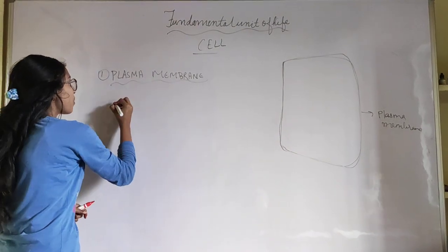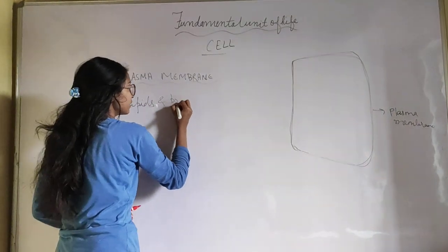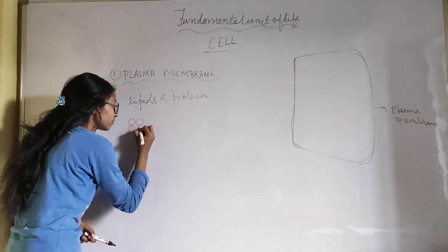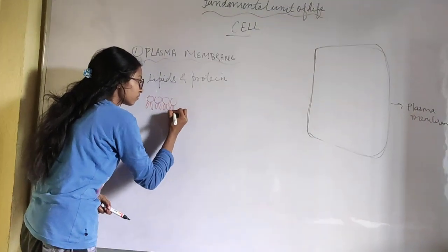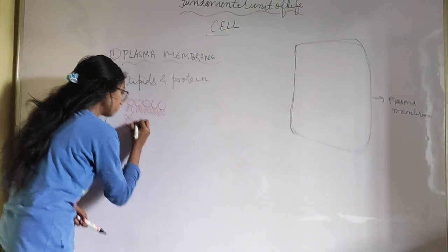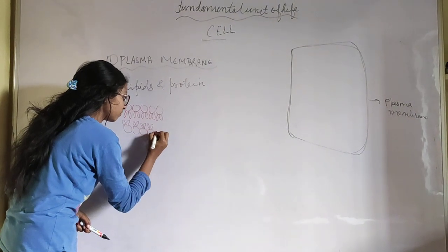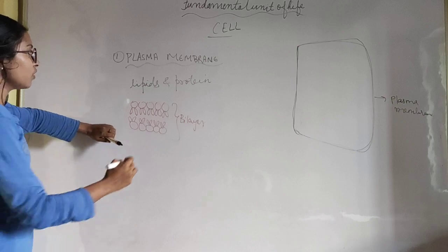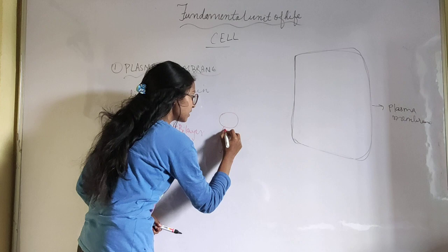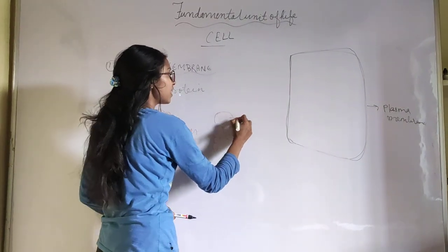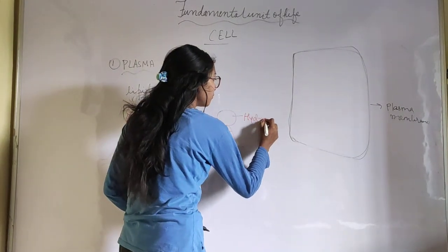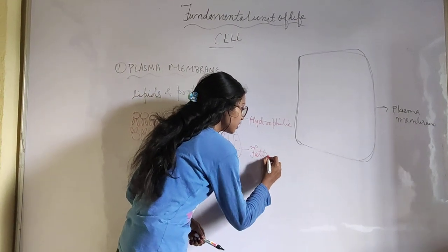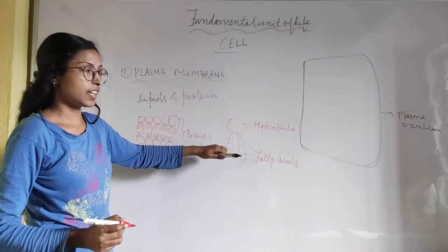Plasma membrane is made up of a lipid bilayer and protein. Looking at its structure, there is a phospholipid bilayer. Each unit has a head and a tail. The head is hydrophilic — meaning water loving — and absorbs water and glucose. The tail is made up of fatty acids and absorbs fatty substances.